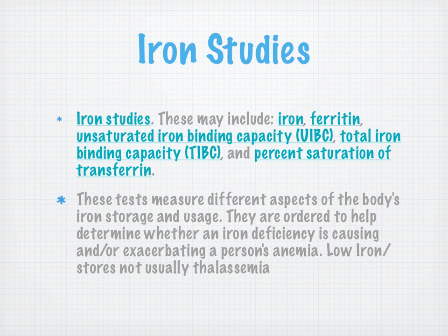Iron studies may include iron, ferritin, unsaturated iron binding capacity or total iron binding capacity, and percent saturation of transferrin. These tests measure different aspects of the body's iron storage and usage. They're ordered to help determine whether iron deficiency anemia is causing or exacerbating the person's anemia. Importantly, low iron stores are not usually thalassemia — that's a key tip to remember.